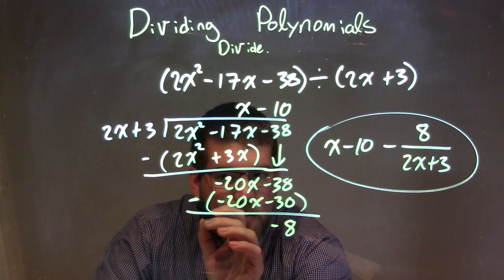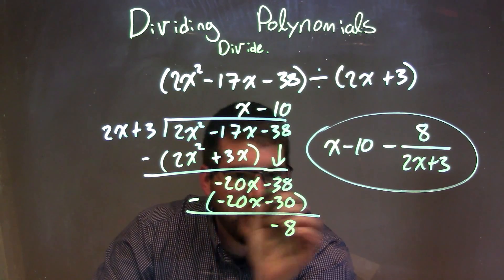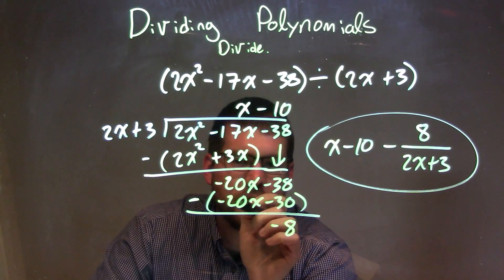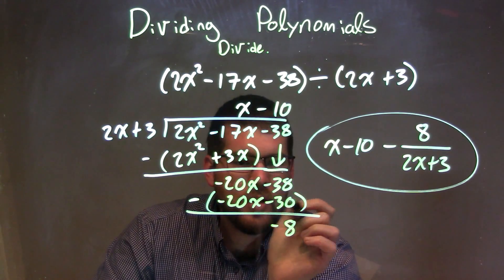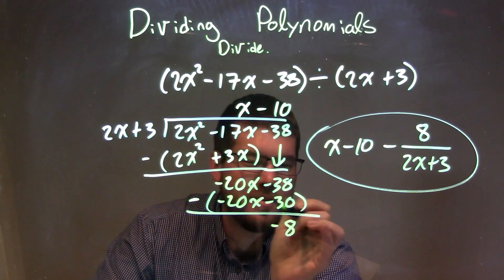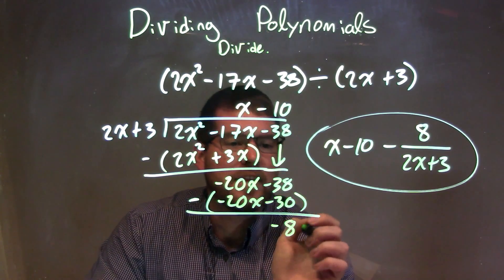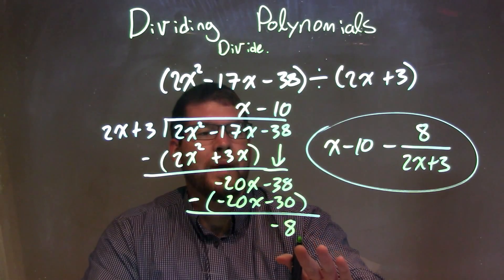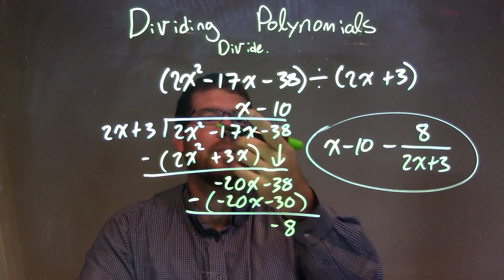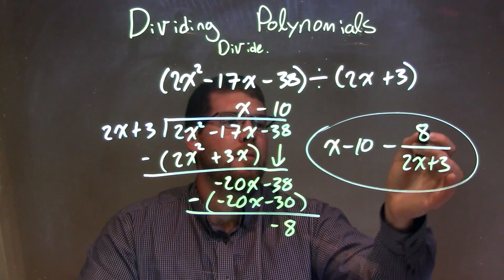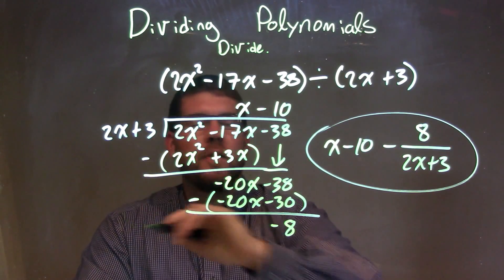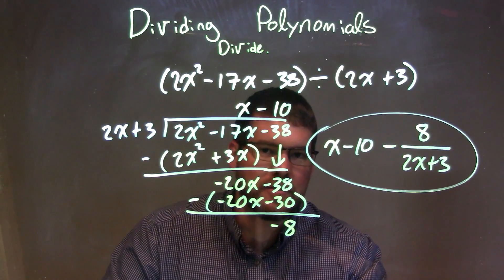I make sure to distribute that minus sign with parentheses. The negative 20x eliminates. Negative 38 minus negative 30 is negative 8, which is my remainder. Now that I have my remainder, I'm pretty much done. I take my x minus 10, write the remainder 8 over my divisor 2x plus 3. And that, folks, is our final answer.